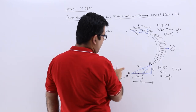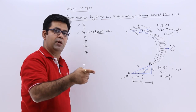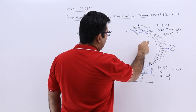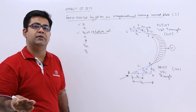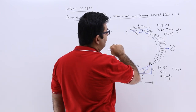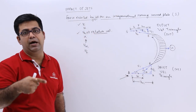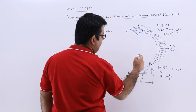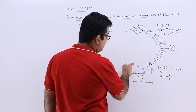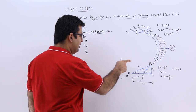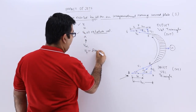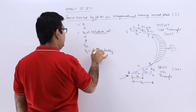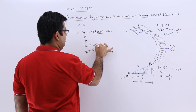The jet strikes at Vr1 at the inlet tip, and the water comes out in absolute terms from the outlet tip with a velocity V2, but in actual it comes out at a velocity Vr2. There are two components of the absolute velocity V1: Vf1, which is called the flow velocity, and Vw1, which is the whirl velocity.